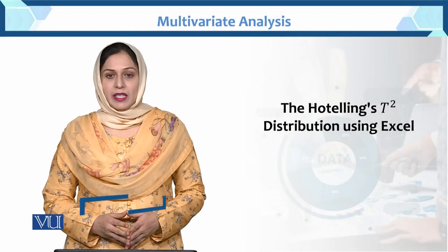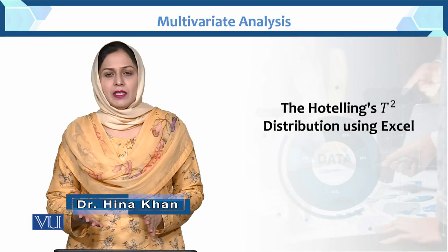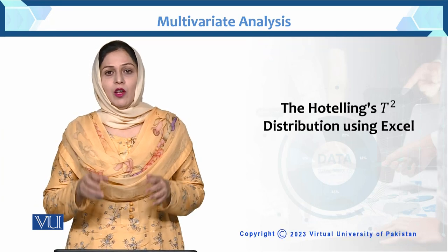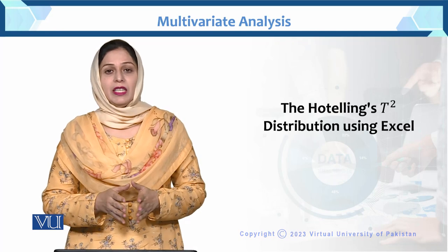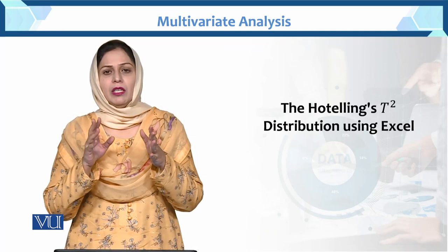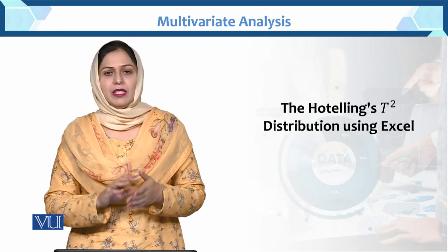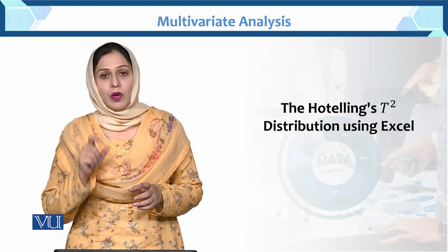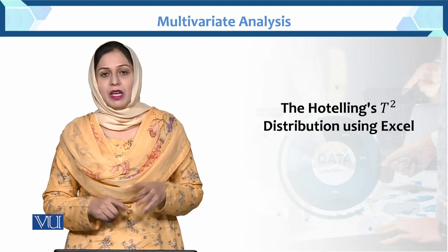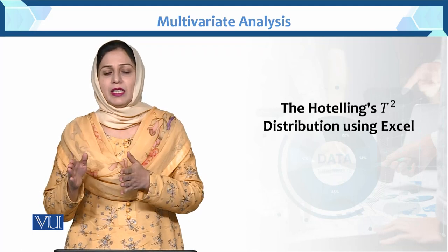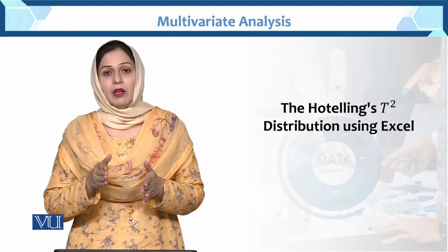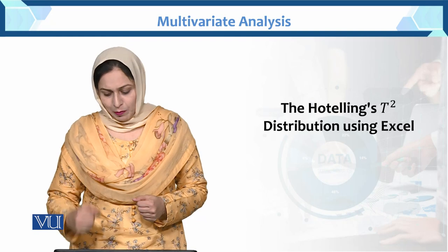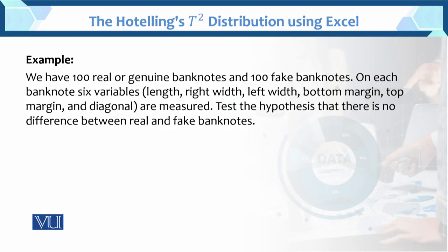This is the Hotelling T-square distribution using Excel. In the multivariate case, we are testing the mean vector. In the univariate case, we test the difference between two means, but in the multivariate case, we test the mean vector. When we have two mean vectors to test, we use the Hotelling T-square distribution. Today we will compute Hotelling T-square in Excel.